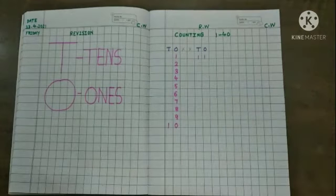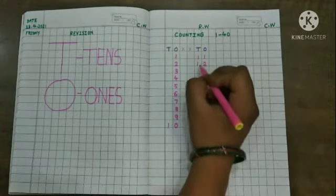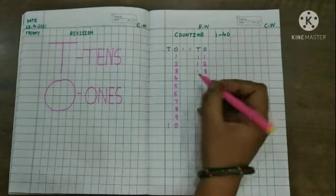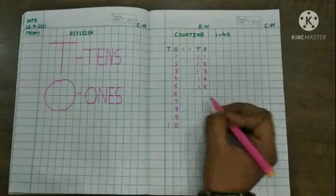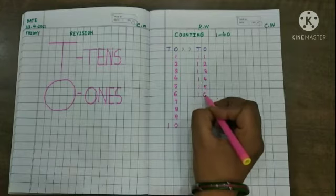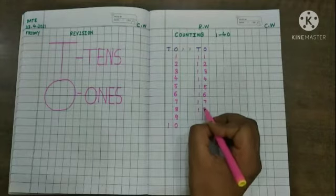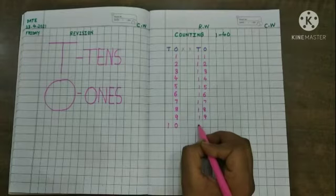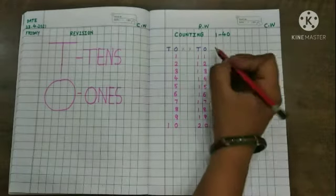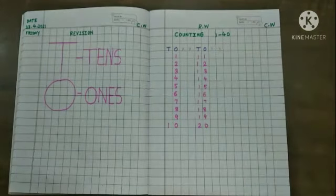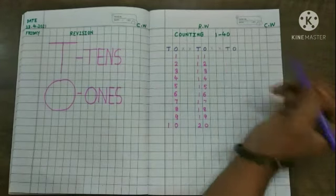1, 1, 11. 1, 2, 12. 1, 3, 13. 1, 4, 14. 1, 5, 15. 1, 6, 16. 1, 7, 17. 1, 8, 18. 1, 9, 19. 2, 0, 20. Now again you put cross mark in these 2 blocks. Come to the next. Again you write T for tens and O for ones.